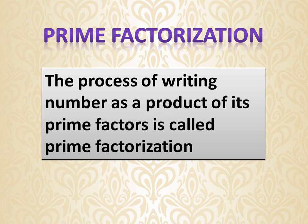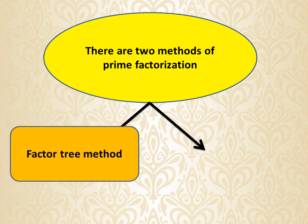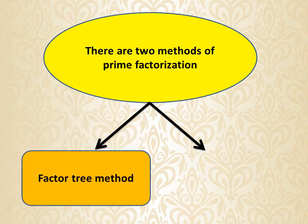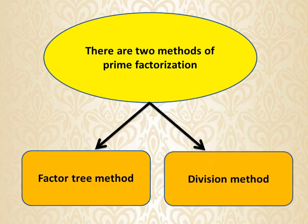So now you know: prime factorization is the process of writing a number as a product of its prime factors. There are two methods of prime factorization — the first is the factor tree method, and the second is the division method. Today we'll learn to solve sums through the factor tree method.